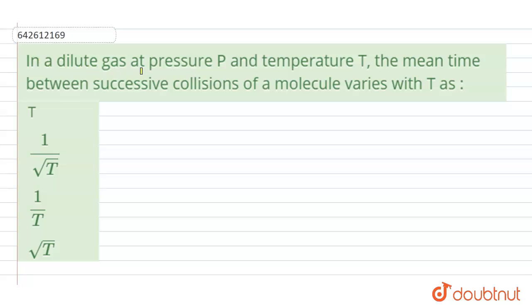Hello everyone, the question says that in a dilute gas at pressure P and temperature T, the mean time between successive collision of a molecule varies with T as.